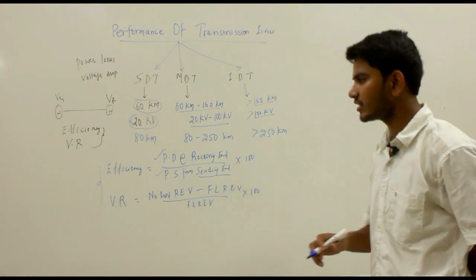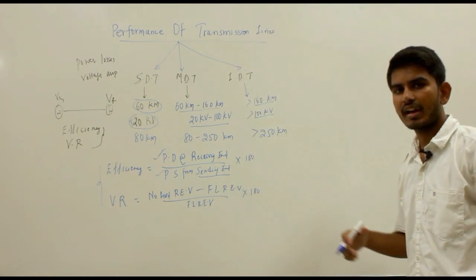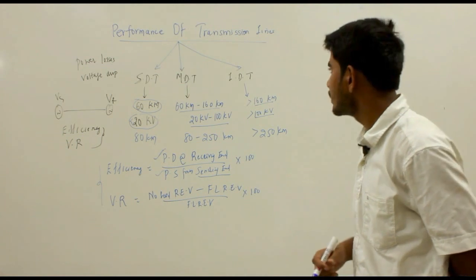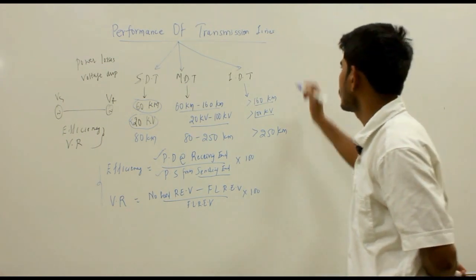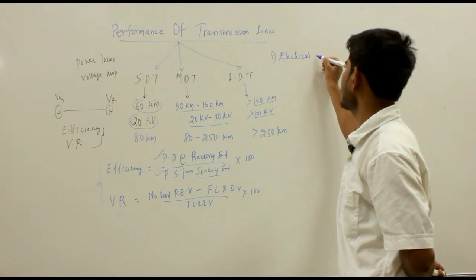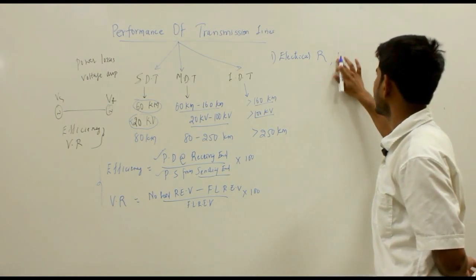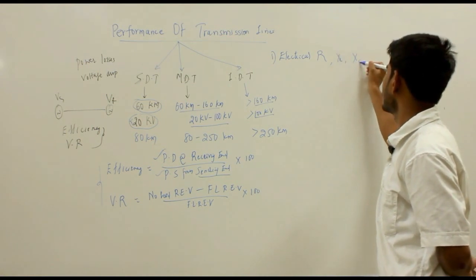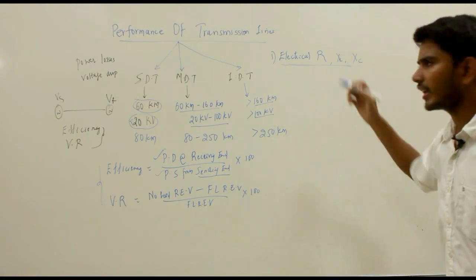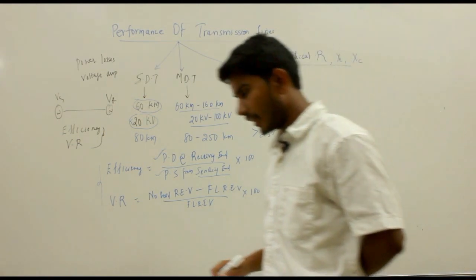The transmission line is a set of conductors which carries power from one place to another, where the conductors are supported on transmission towers. Such transmission lines have three basic parameters uniformly distributed along the line: electrical resistance, inductance, and capacitance.